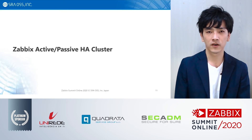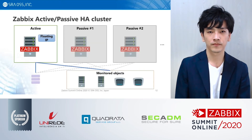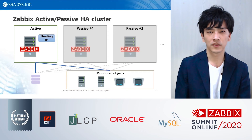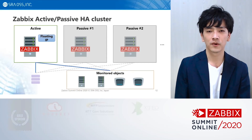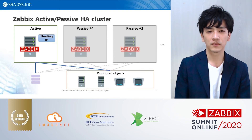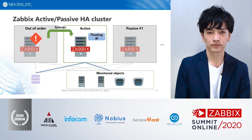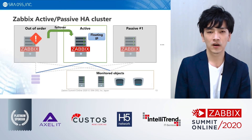Next is Active-Passive Cluster. In an Active-Passive Cluster, you build multiple Zabbix servers and only one of them runs. Monitored objects are monitored via a floating IP address, and the database is shared with all servers. If the running Zabbix server fails, the Zabbix server is failed over to another node via cluster software, and monitoring is continued.